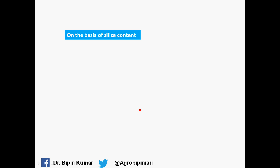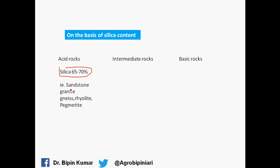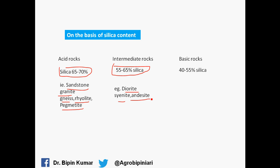On the basis of silica content, rocks are classified into acid rocks, intermediate rocks, and basic rocks. Acid rocks have 65–70% silica content, with examples being sandstone, granite, gneiss, rhyolite, and pegmatite. Intermediate rocks have 55–65% silica content, with examples being diorites and syenite. Basic rocks have 40–55% silica content, with examples including limestone, basalt, diabase, and gabbro.